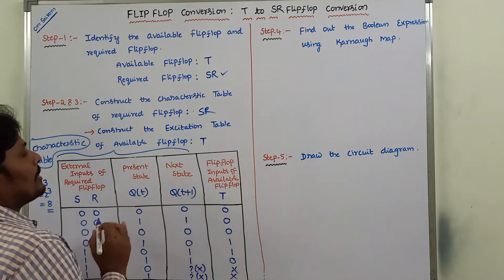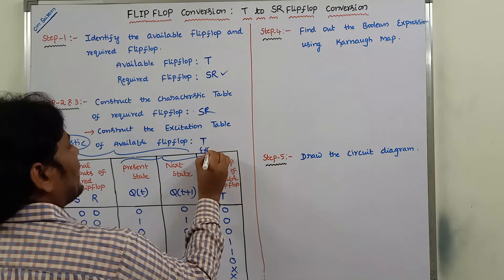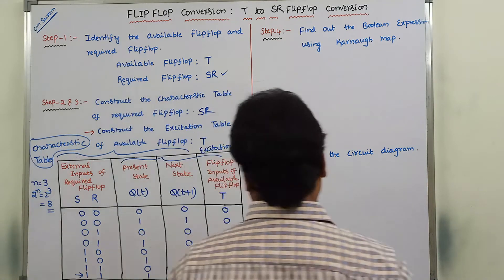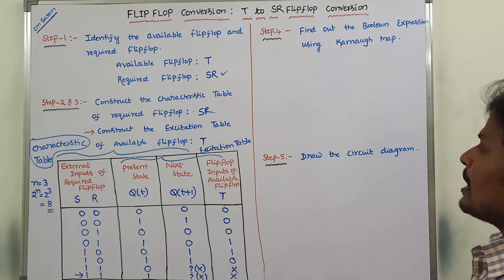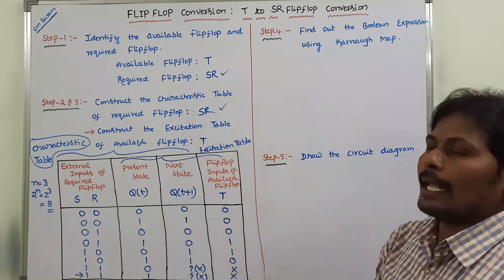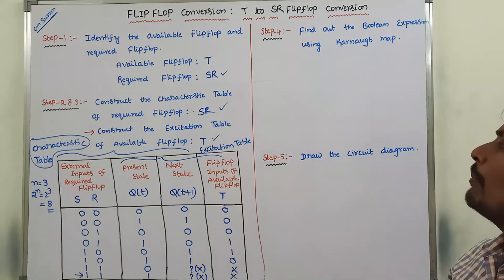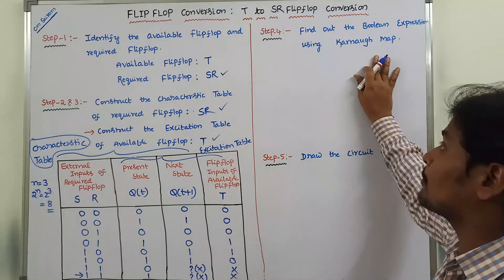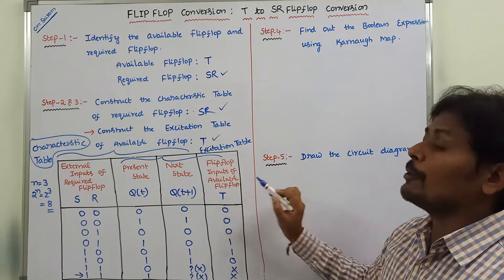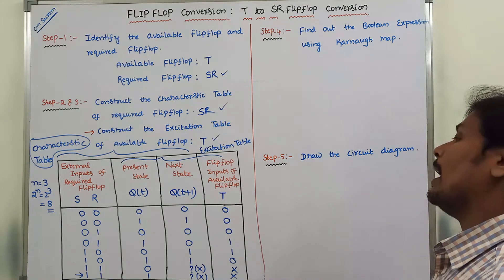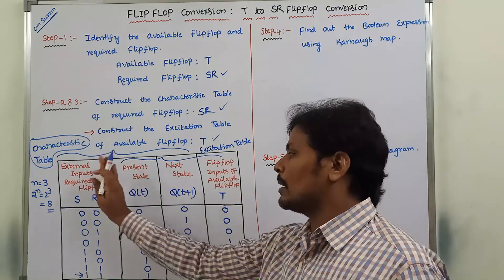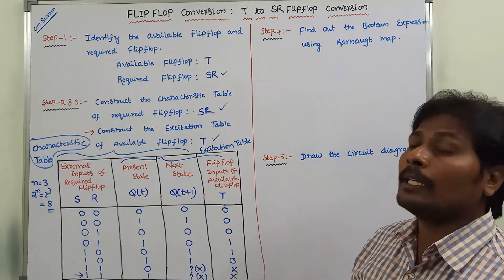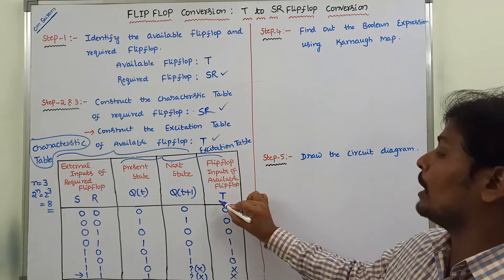The last three columns represent the excitation table of the available flip-flop, which is the T flip-flop. Once we have constructed the characteristic table of the required flip-flop (SR) in step 2 and the excitation table of the available flip-flop (T) in step 3, we go to step 4. In step 4, we find the Boolean expression for variable T using the Karnaugh map. We use a three-variable Karnaugh map because there are three input variables: S, R, and Q(T).